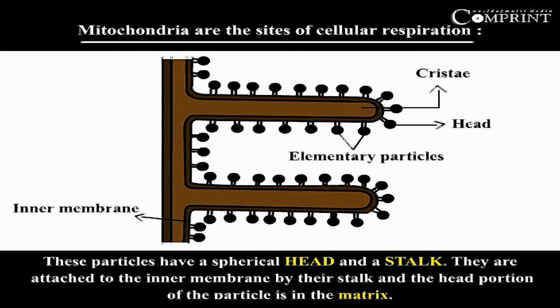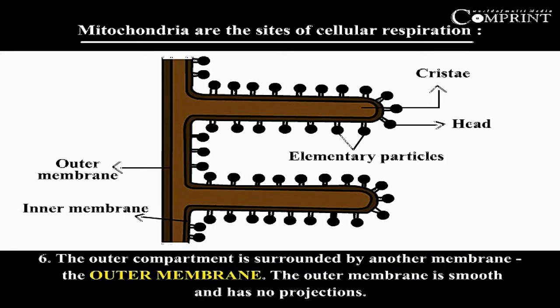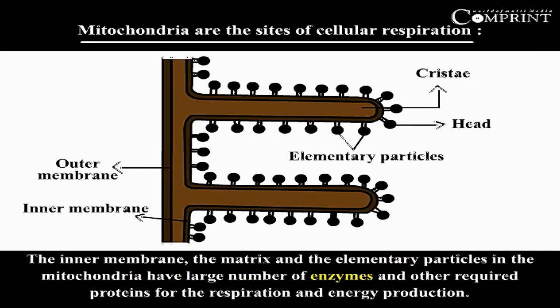On the inner membrane, projecting into the matrix, are a large number of particles called elementary particles. These particles have a spherical head and stalk; they are attached to the inner membrane by their stalk, and the head portion projects into the matrix. The outer compartment is surrounded by the outer membrane, which is smooth and has no projections. The inner membrane, the matrix, and the elementary particles contain a large number of enzymes and other required proteins for respiration and energy production.